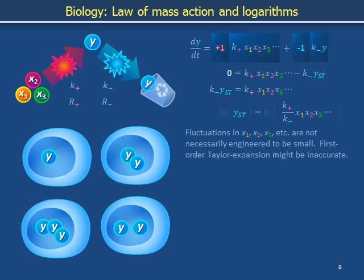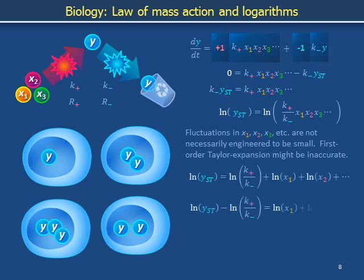However, we can still recover an equation to which the central limit theorem pertains. Take the natural log of both sides. Recall that logarithms convert products into sums. Move the logarithm of the ratio of rate coefficients to the left and then finally, relabel the resulting expression using capital Y on the left and capital X1 plus capital X2 plus so forth on the right.